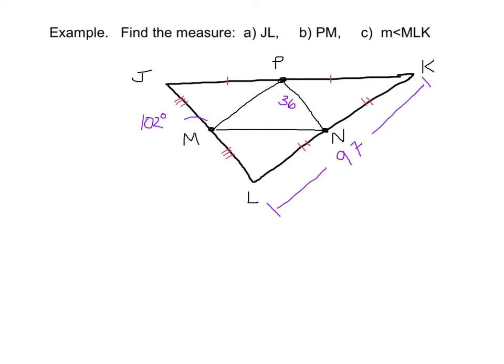Okay, so now we've got an example using the midsegment stuff. This one says to find the measure, there's three parts. Find the length of JL, the length of PM, and the measurement of angle MLK. Okay, if you see we have a big triangle here with our midsegment triangle in here. Also it's very important to note that we do have the congruencies going all the way around, meaning that these points are the midpoints, which means that all of these segments are midsegments. It is important to know because there will be some that trick you.